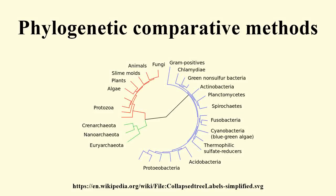Phylogenetic comparative methods use information on the historical relationships of lineages to test evolutionary hypotheses. The comparative method has a long history in evolutionary biology. Indeed, Charles Darwin used differences and similarities between species as a major source of evidence in the Origin of Species. However, the fact that closely related lineages share many traits and trait combinations as a result of the process of descent with modification means that lineages are not independent. This realization inspired the development of explicitly phylogenetic comparative methods.